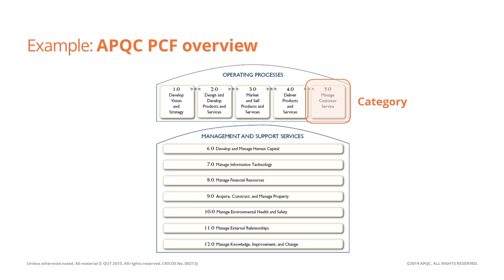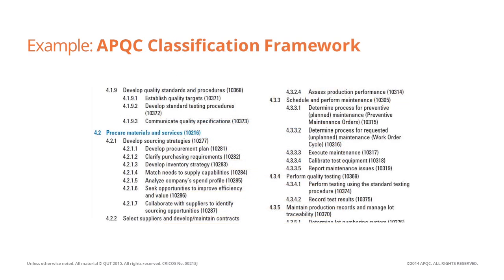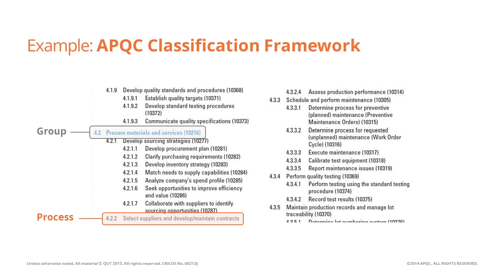Drilling down into a particular category, such as manage customer service, we can see a list of business processes grouped according to a process grouping. For example, 'procure materials and services' is a particular group which contains processes such as 'select suppliers' and 'develop or maintain contracts.' Each process in turn contains a list of activities, such as 'match needs to supply capabilities,' which is an activity of the process 'develop sourcing strategies.'